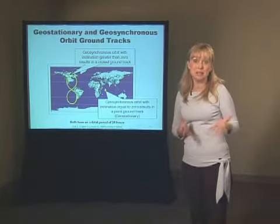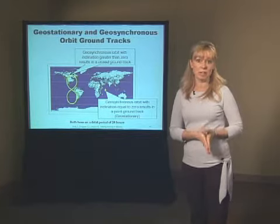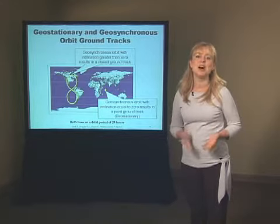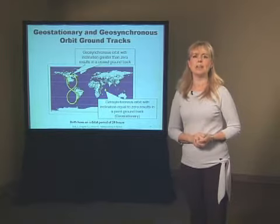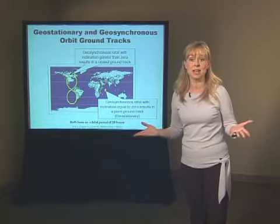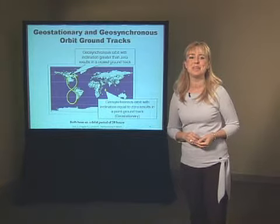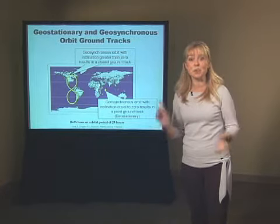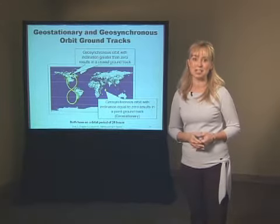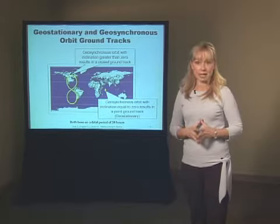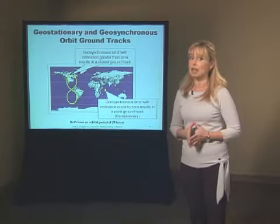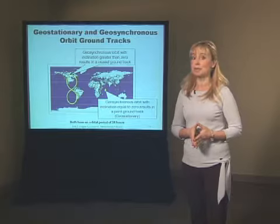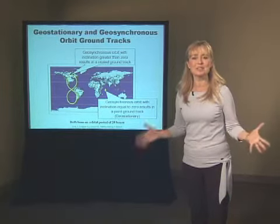A spacecraft in geostationary orbit appears motionless to an Earth-based observer. If you have satellite TV in school or at home, you'll notice that the satellite dish does not move — it's pointed to a spacecraft in geostationary orbit. Here's some information you can actually use: if you're lost in a city and need to get your direction straight, you can use a satellite dish to tell you where south is. In the U.S., all of our satellite TV dishes point south to spacecraft located in geostationary orbit. Geosynchronous and geostationary orbits are also useful for weather, military early warning, and remote sensing, because spacecraft in these orbits can see wide areas and even entire continents.